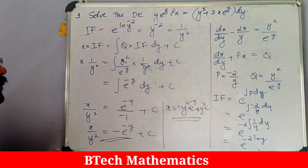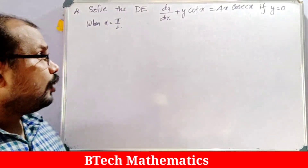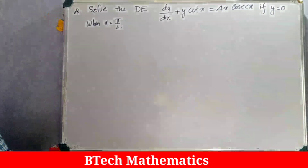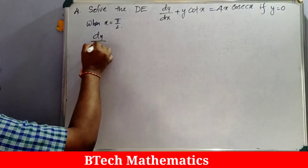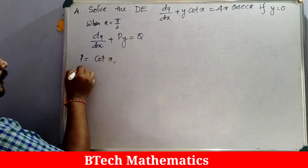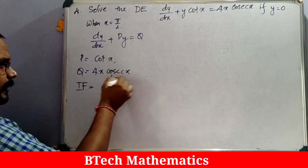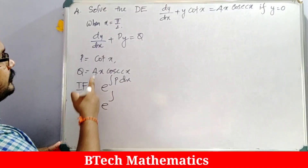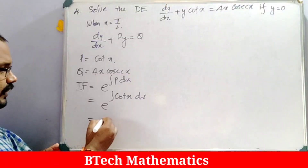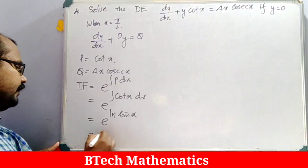Fourth question (initial value problem): solve dy/dx + y cot x = 4x cosec x, given y = 0 when x = π/2. Comparing with dy/dx + Py = Q gives P = cot x and Q = 4x cosec x. The integrating factor is e^(∫cot x dx) = e^(ln|sin x|) = sin x.